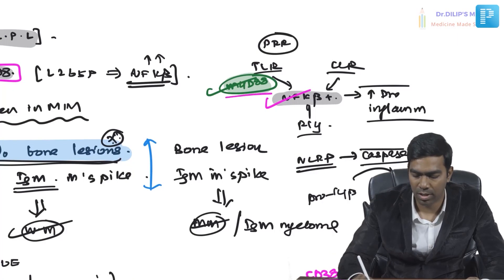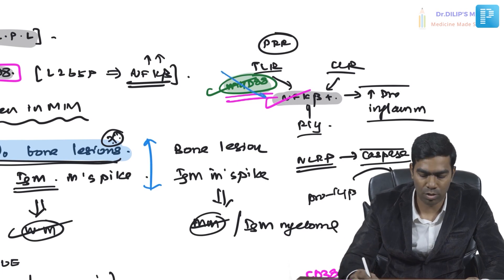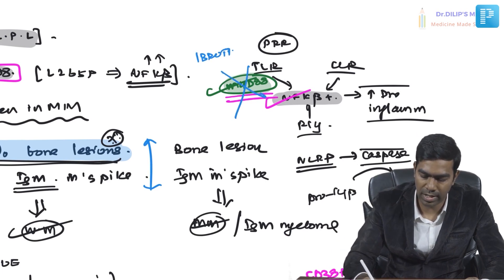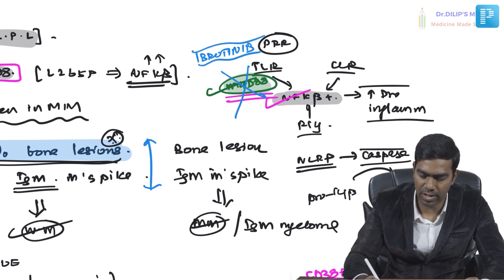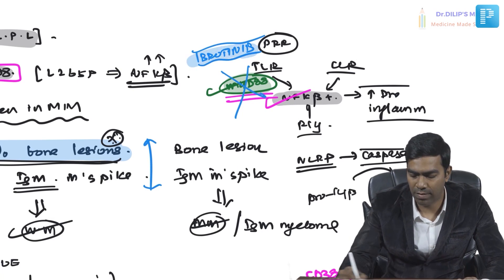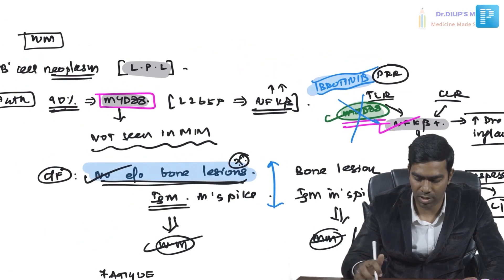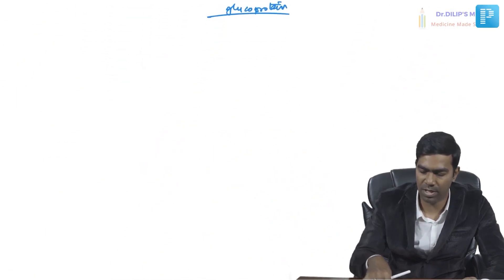Ibrutinib works well because MYD88 mutations are one of the main drivers of Waldenström's, and the MYD88 pathway responds very nicely to ibrutinib. However, since only 90% of patients have MYD88 mutations, it is important to confirm the MYD88 mutation before starting ibrutinib. If the MYD88 mutation is confirmed, there is a high response rate, proven by multiple trials. This concludes Waldenström's macroglobulinemia.